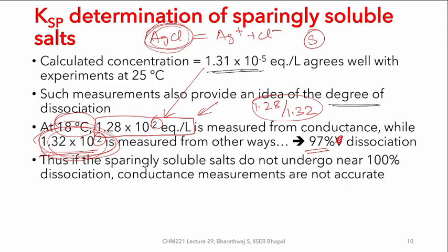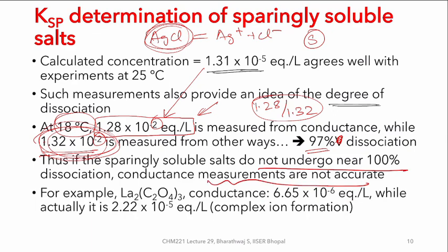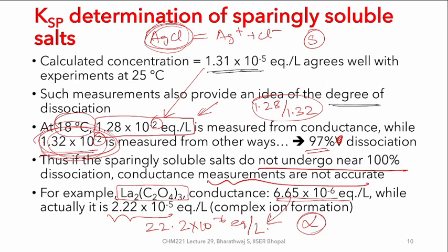If the sparingly soluble salt does not undergo 100% dissociation, then conductance measurements will not be accurate. For example, lanthanum oxalate: the measured value from conductance is 6.7 × 10⁻⁷ equivalents per liter, while another measurement gives 22.2 × 10⁻⁶ equivalents per liter — indicating only about one third of ions are conducting. Although it is tempting to interpret this as degree of dissociation, it is actually known that lanthanum oxalate forms other complex ions that result in lack of migration.